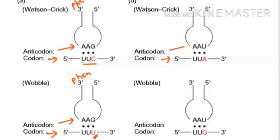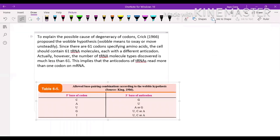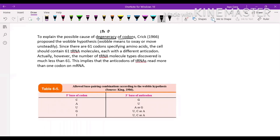Now consider another example: if the codon is UUA, the anticodon on tRNA will have U opposite A on messenger RNA. If you substitute A with G, you have done a mutation, but still the correct amino acid is produced. This explains the degeneracy of the codon. This third position is known as the Wobble Position, and it leads to silent mutation — changes at the wobble position result in silent mutations.